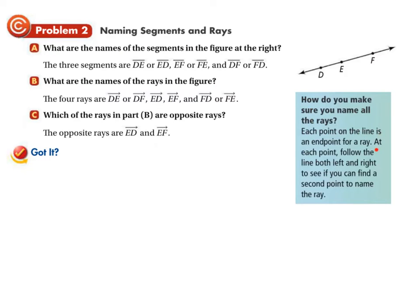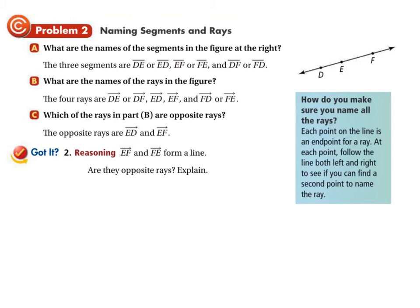Which rays are opposite rays? To have opposite rays you need to go in both directions from a shared end point. From D you can't go left to find a named second point, and from F you can't go right. So the opposite rays must start at E: ray ED going one direction and ray EF going the opposite direction. Rays ED and EF are opposite rays — they share end point E, lie on the same line, and together form a complete line with no gap or overlap. Now stop the video and solve the practice problems.